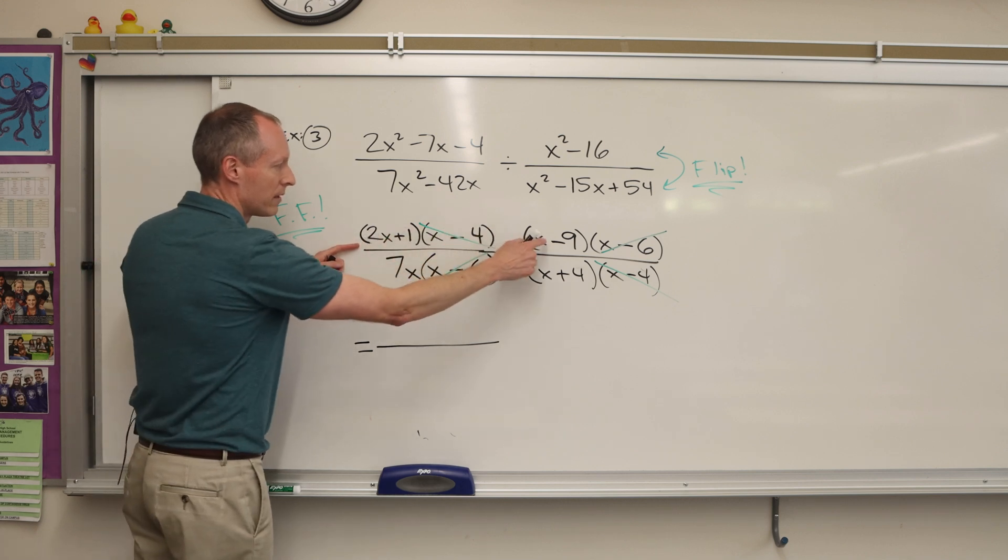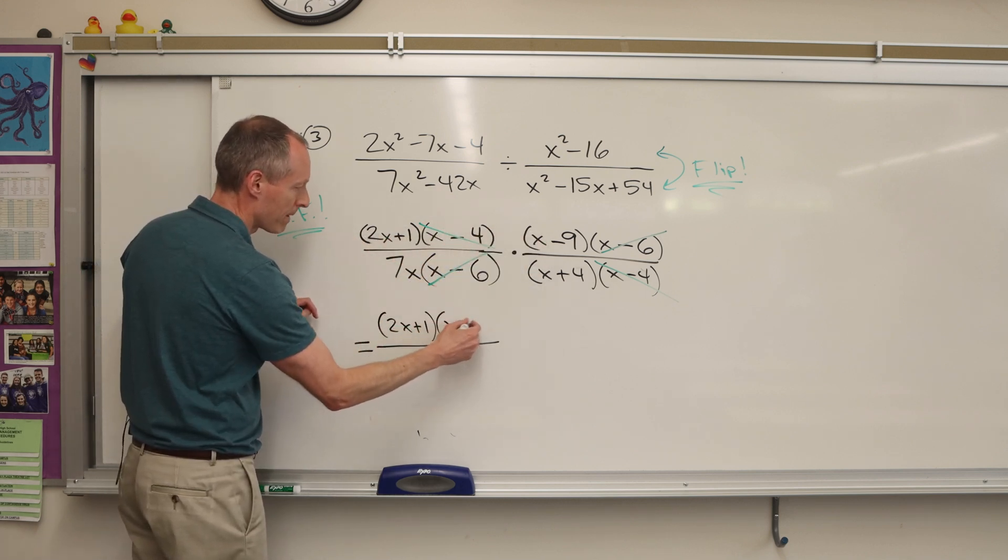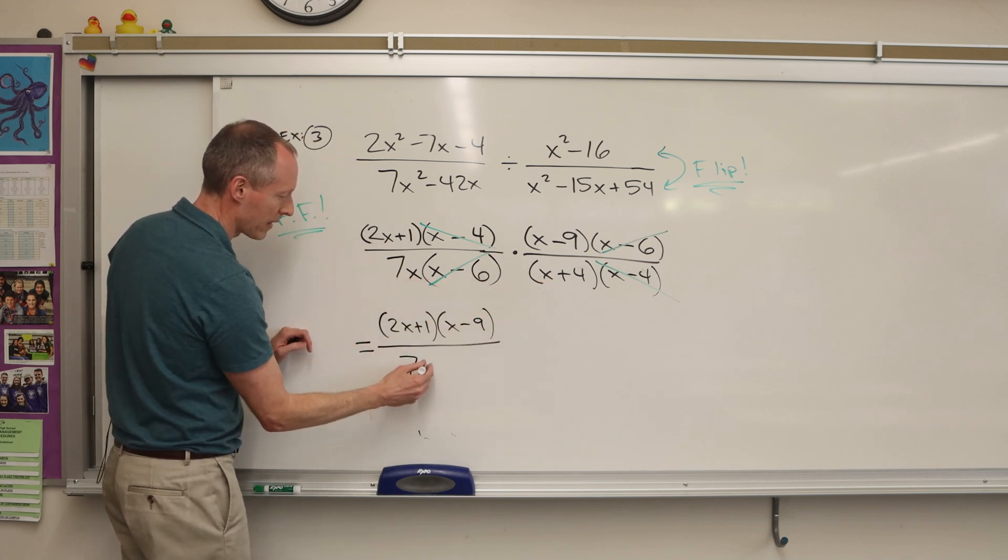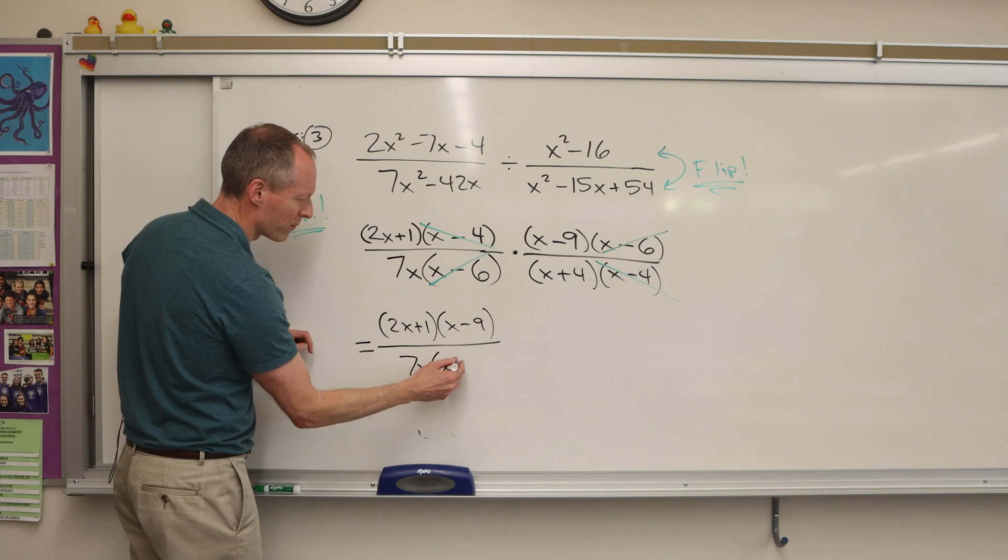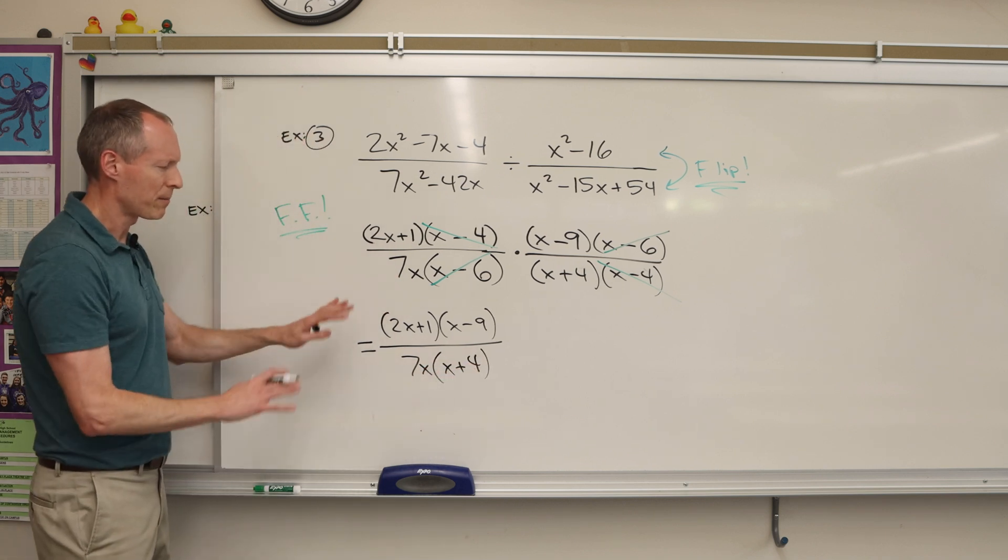And some students want to go further and distribute this or multiply it. Foil it out the top. But it's better. This is the better way to leave your answer. It's called factored form.